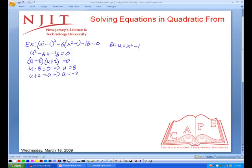Now we have to substitute the x squared minus 1 back in. So x squared minus 1 equals 8, so then x squared equals 9, and x equals plus or minus 3.